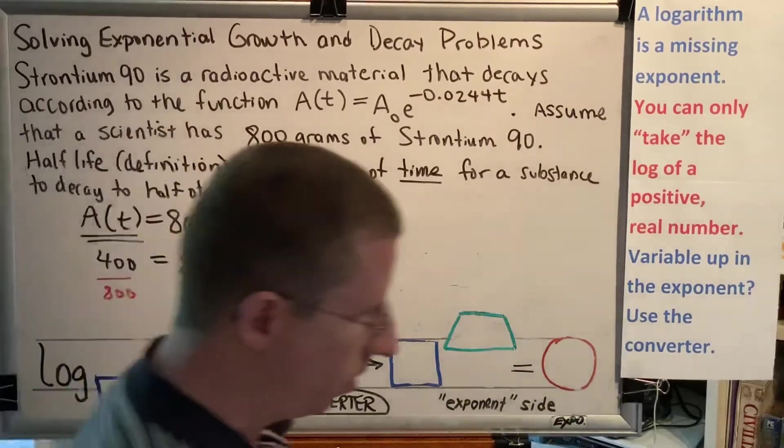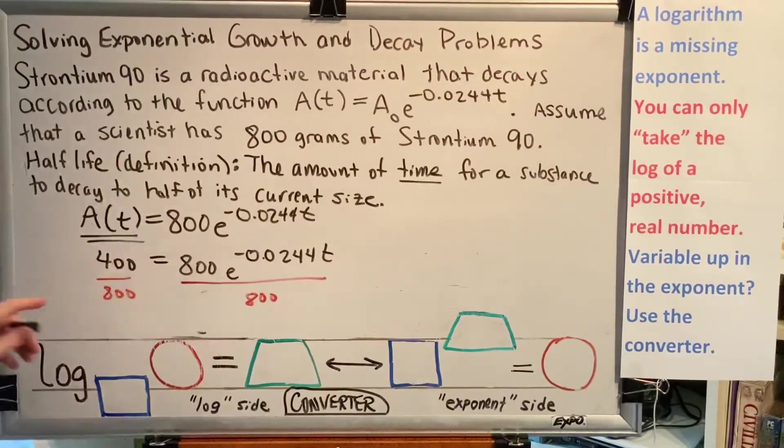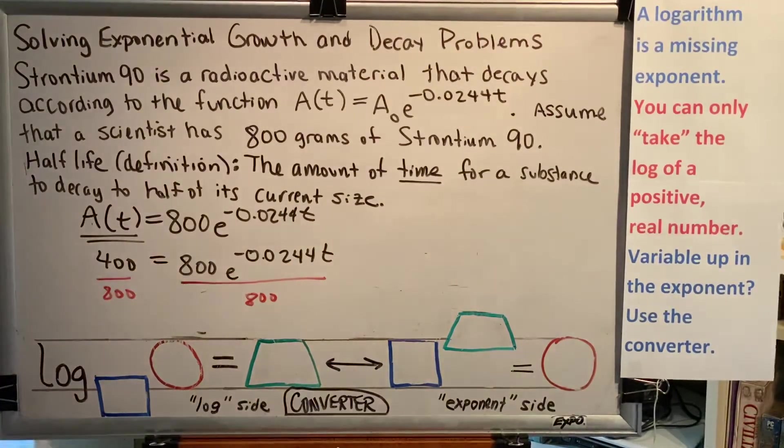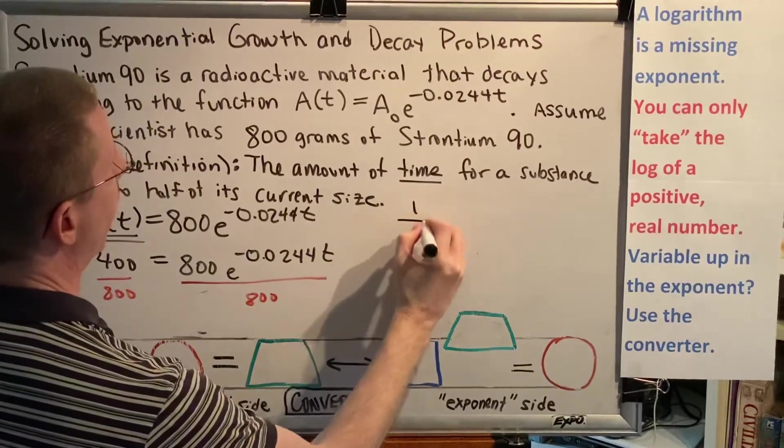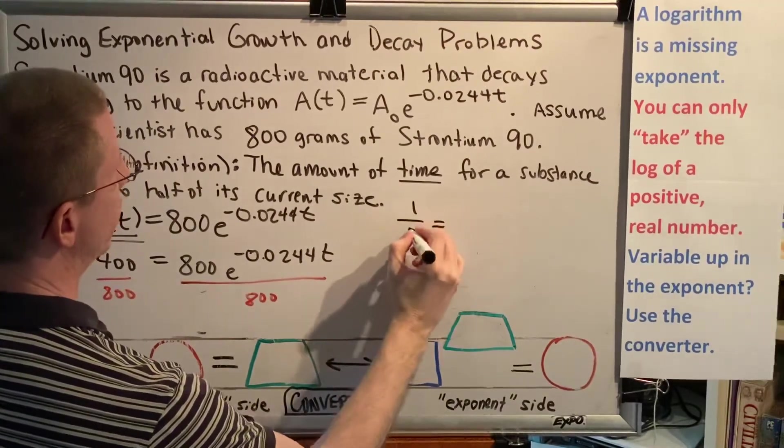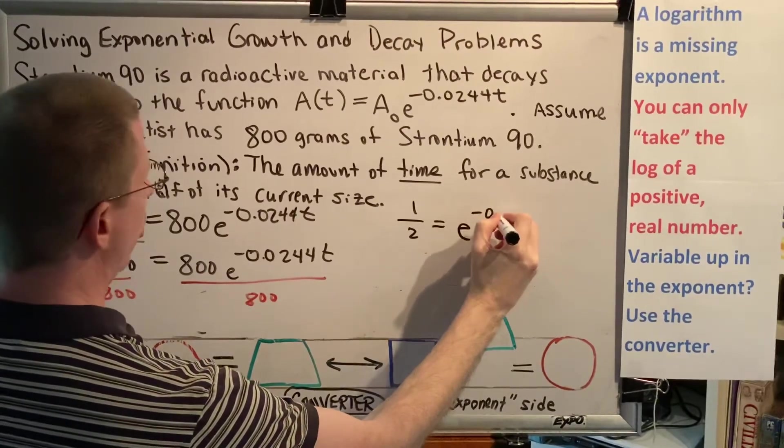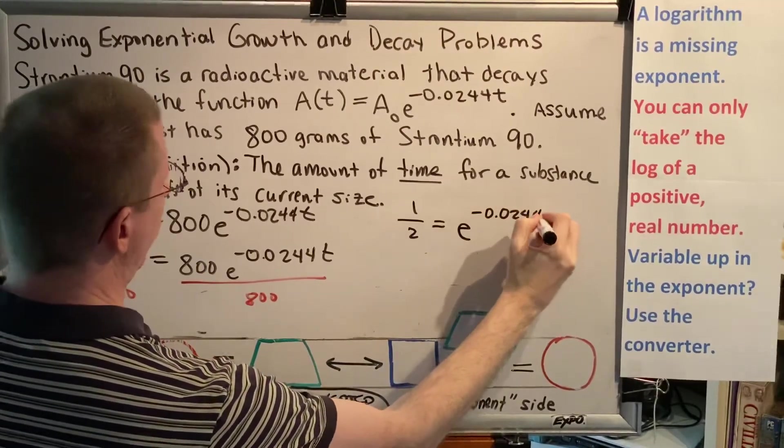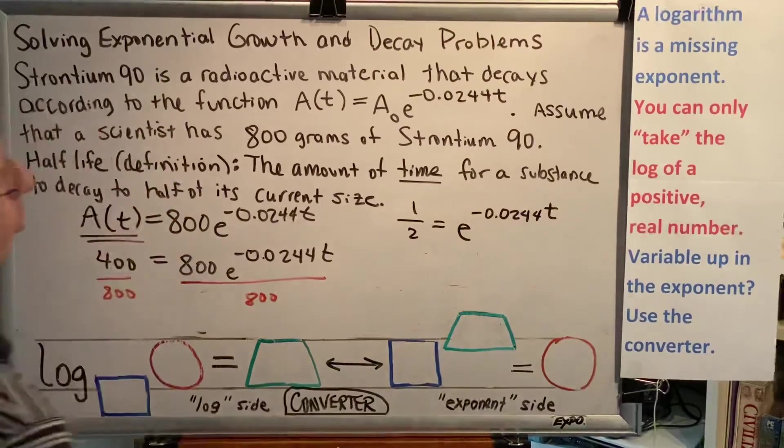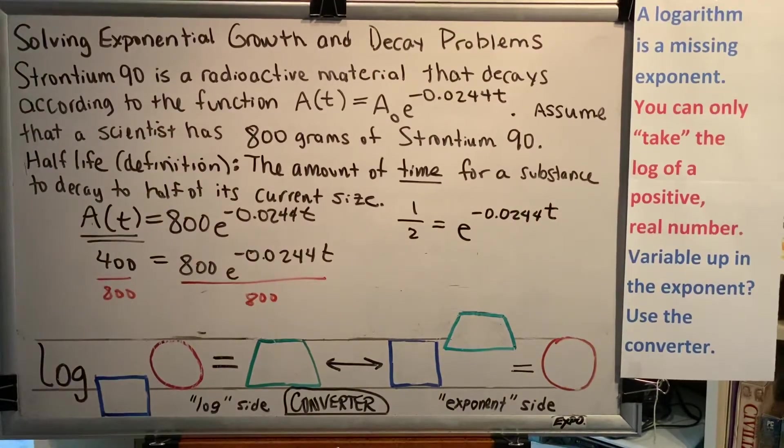So let's divide both sides by 800. Now, here's the interesting part. What's 400 divided by 800? One half. And this is a half-life problem. Is it just a coincidence that we got one half? The answer is no. When you're doing a half-life problem, if one half shows up for your argument, that means you're doing things correctly.